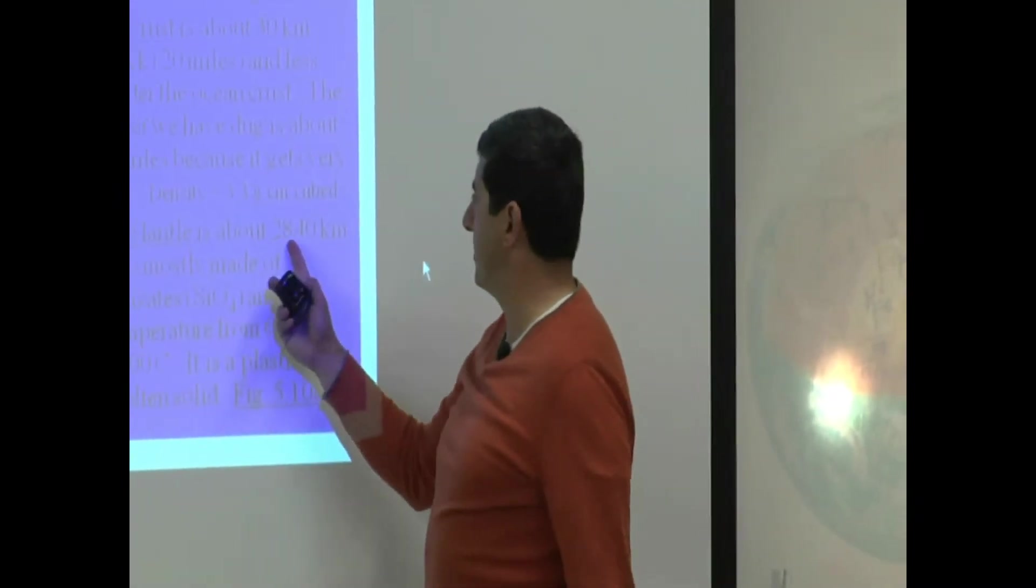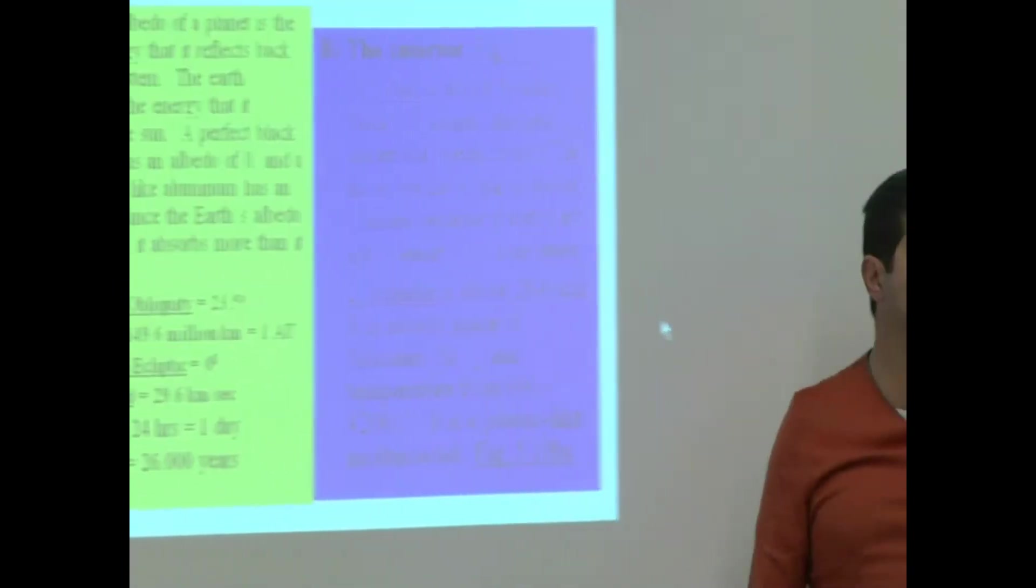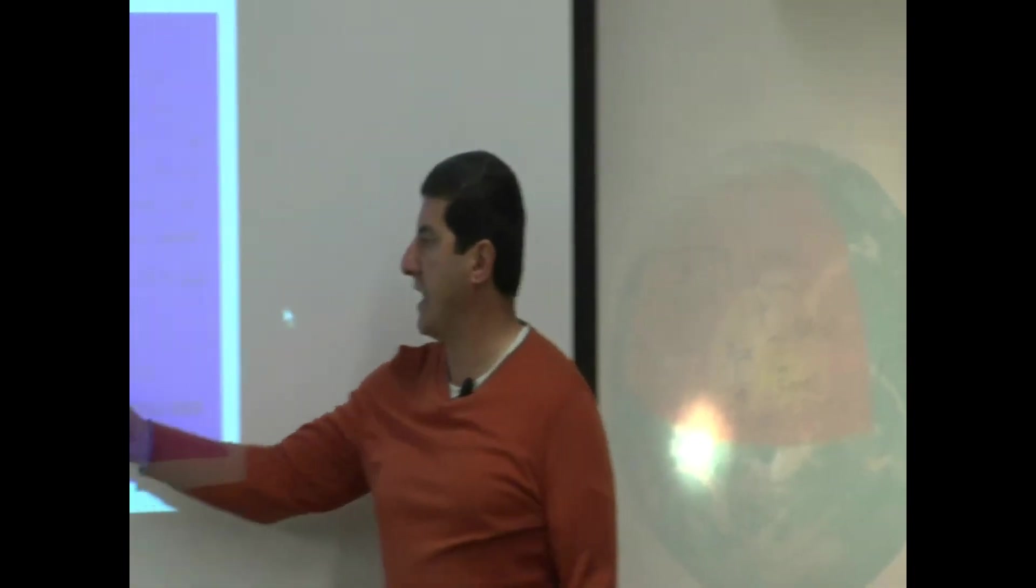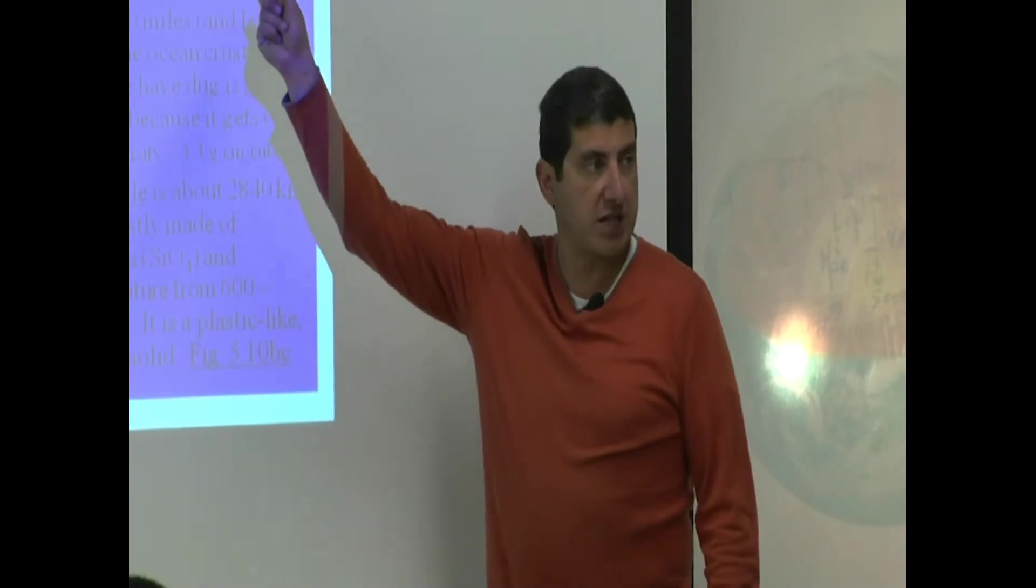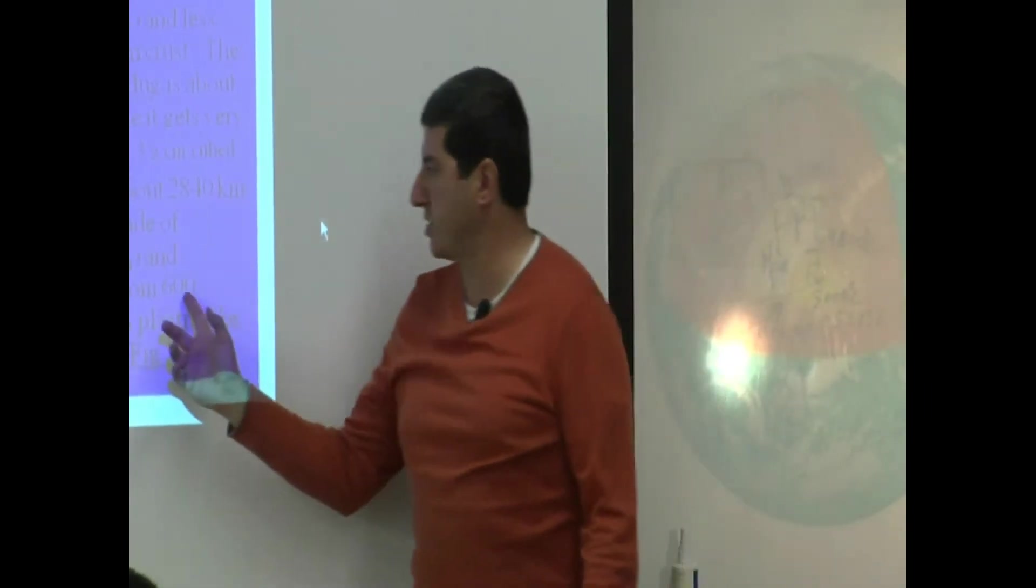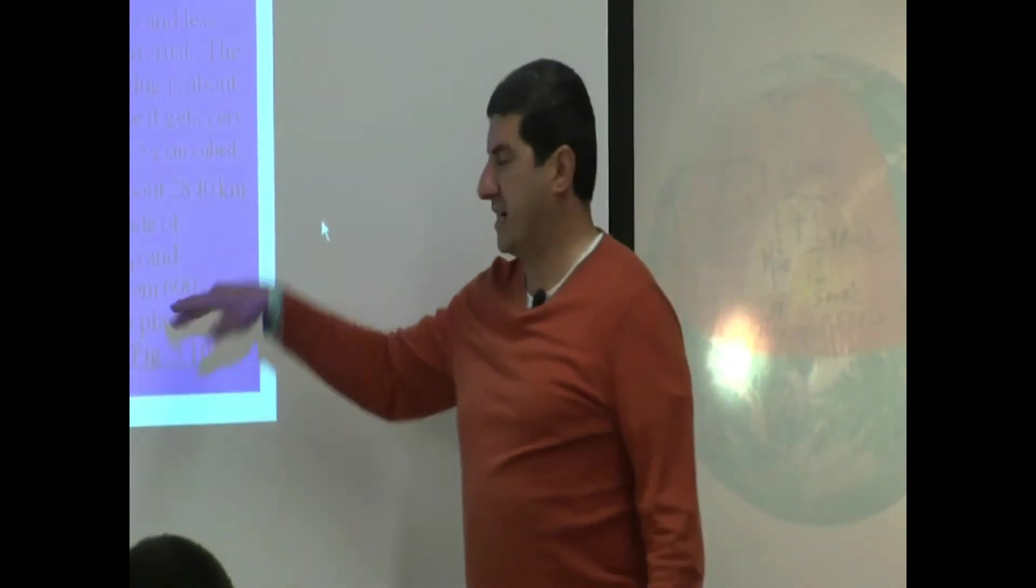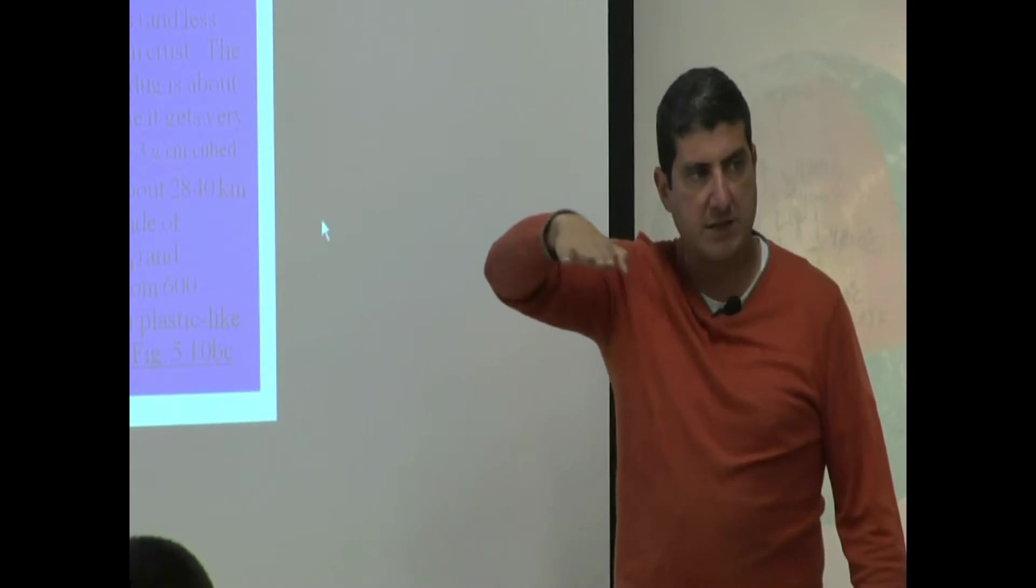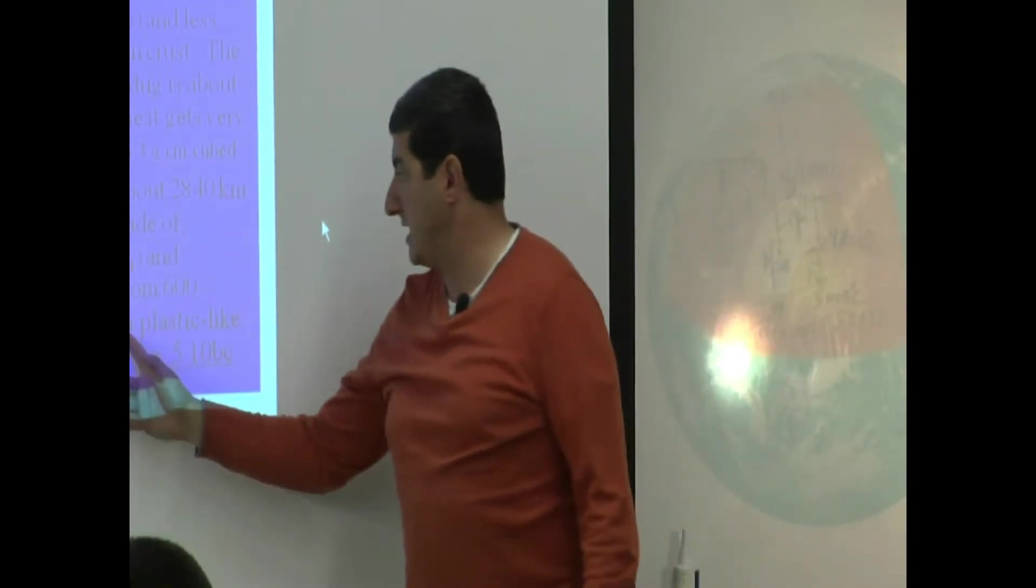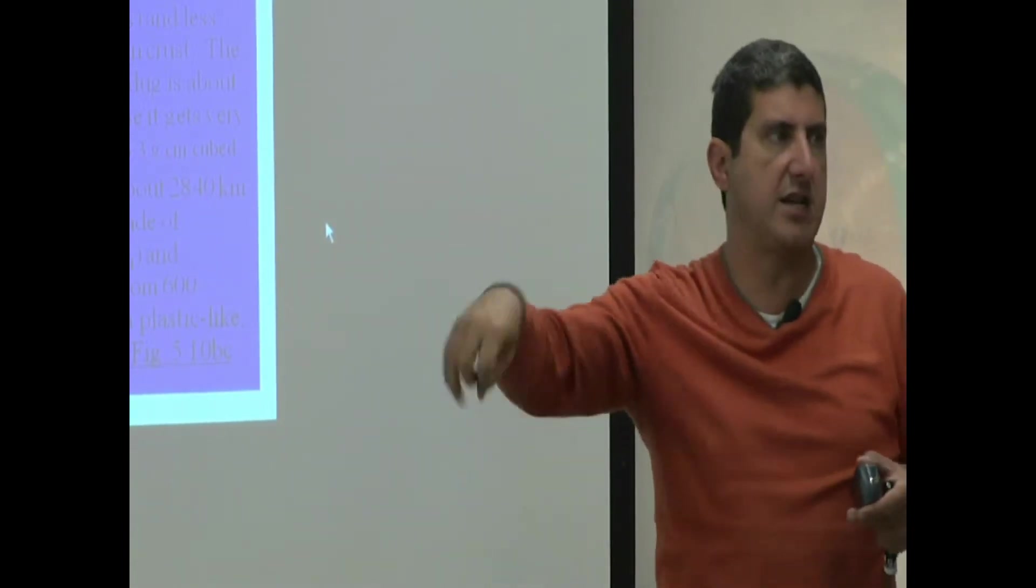Mantle is the next one. It's about 2,840 kilometers. It is mostly made up of silicates. Silicates is the word we use when we mention SiO4, and you saw that in the chart. The temperature is starting to go way up, 600 to 4,200 Celsius in the mantle. By the time you get way down under the mantle, 4,200 Celsius. It is a plastic-like molten solid, so it's very liquidy but it's not complete liquid. It's solid, it flows like a liquid.